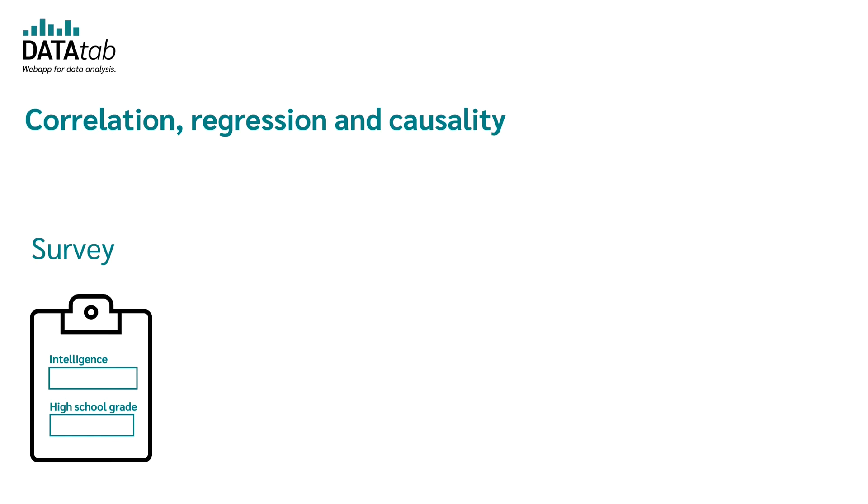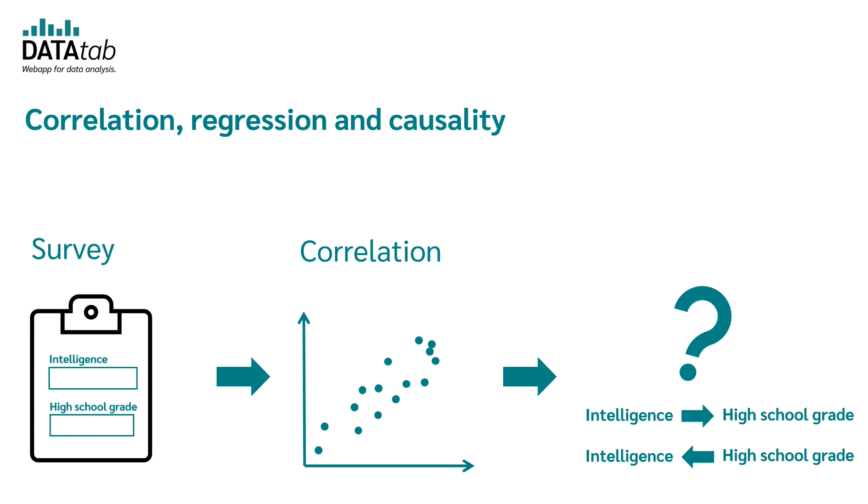After you have done your survey and analyzed the data, it will surely turn out that there is a correlation between intelligence and the high school grade. But now comes the big question mark: is there a causal relationship? Of course, we could now simply set up a regression model and define intelligence as an independent variable and high school grade as a dependent variable and predict the high school grade with intelligence, but with that we have not yet proven causality.